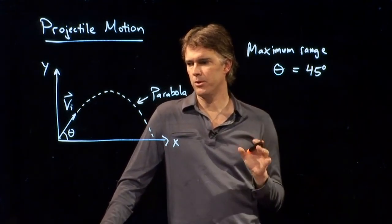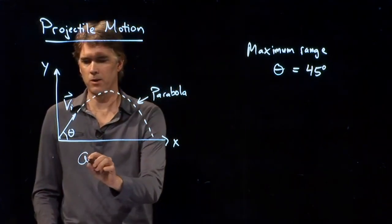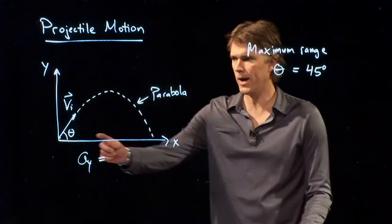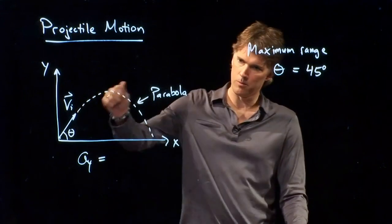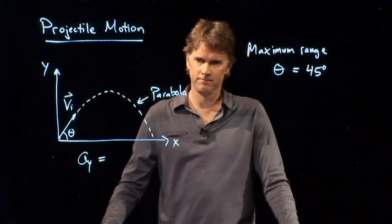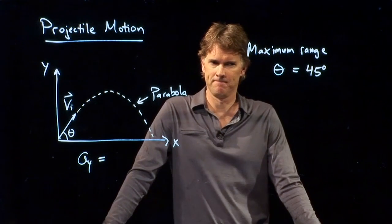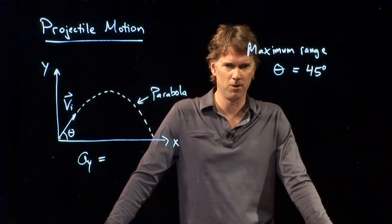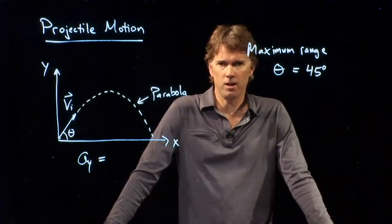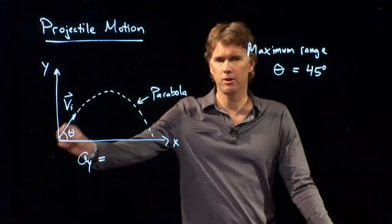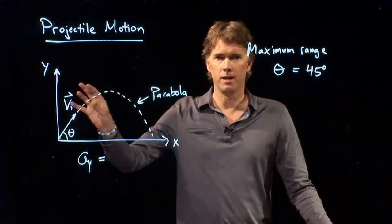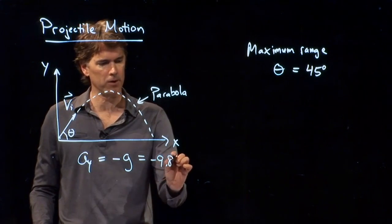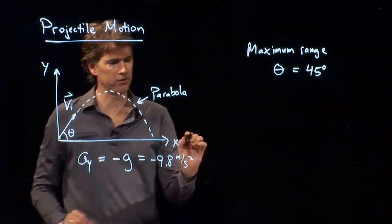But what else can we say about projectile motion? What is the acceleration of the object in the vertical direction? On the way up, is it positive? And then on the way down, is it negative? Somebody in the back is shaking her head no. It's always negative. Right? As soon as it leaves our hand or leaves the cannon or leaves the rifle, it's always negative. It's always negative g, which is negative 9.8 meters per second squared. Here on Earth, of course.